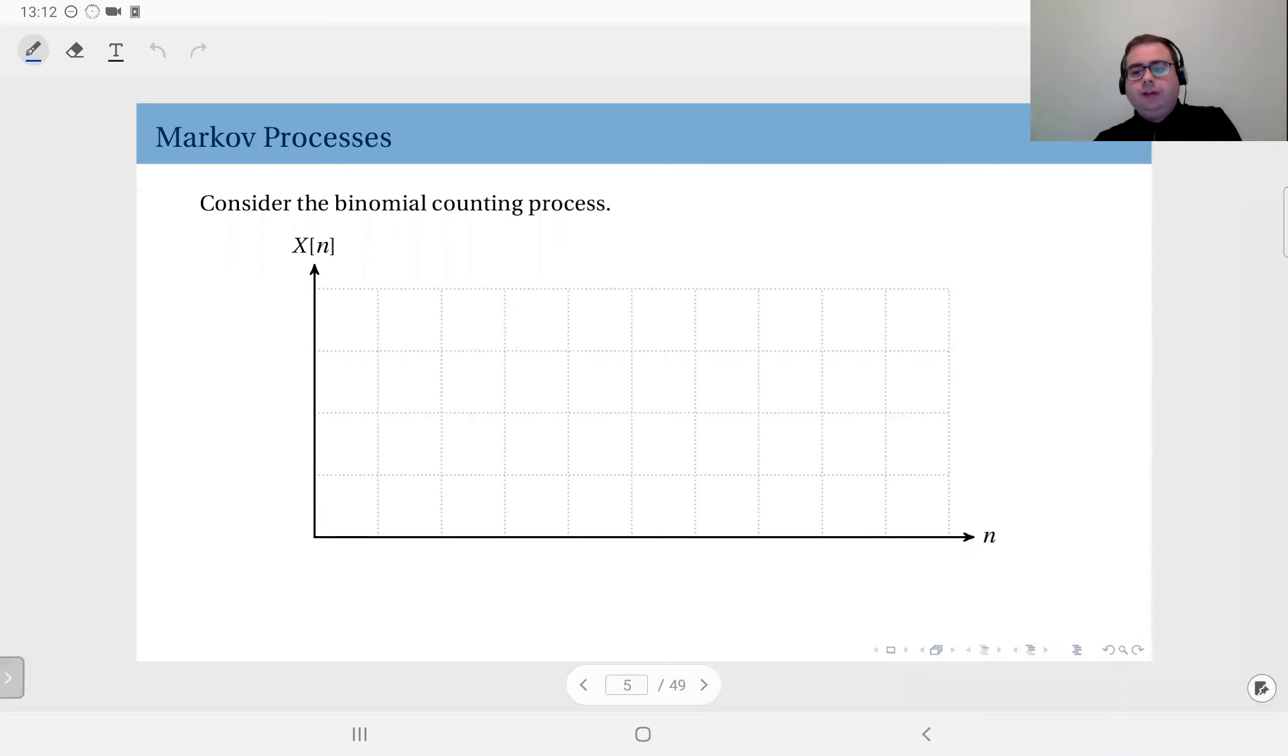Now let's explore a few examples and try to understand what this behavior actually means. Let's take the binomial counting process.